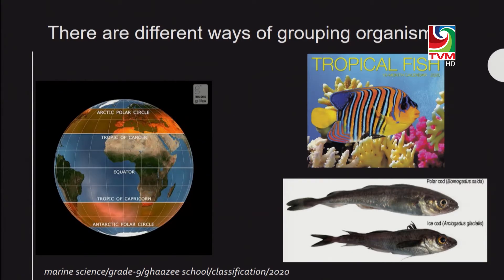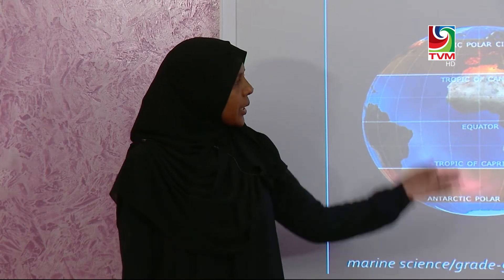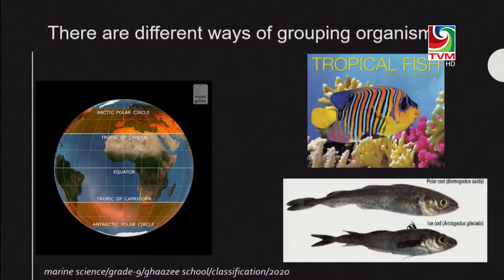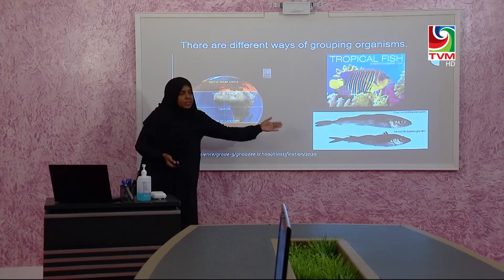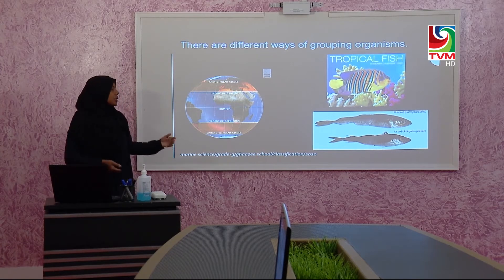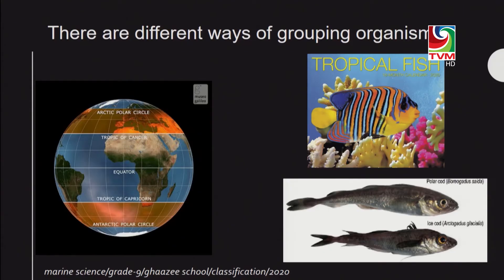Another example from the marine environment involves the zones of the earth — equatorial, tropical, temperate, and polar. Sometimes we refer to organisms like tropical fishes, meaning those that can only live in tropical areas and cannot survive elsewhere. Similarly, organisms that live only in polar regions and very cold environments are referred to as polar fishes. There are many ways to identify or group organisms.